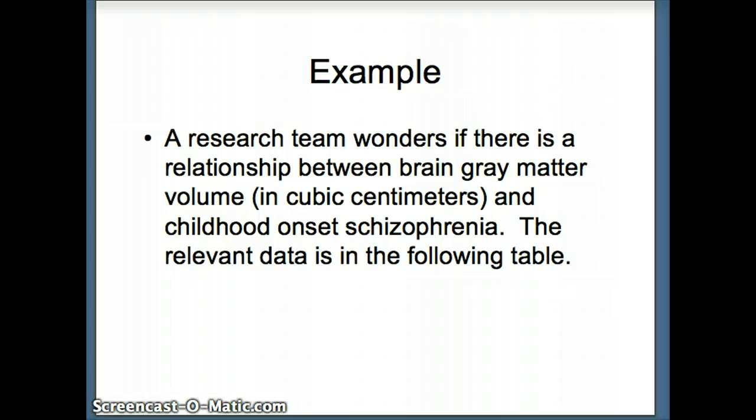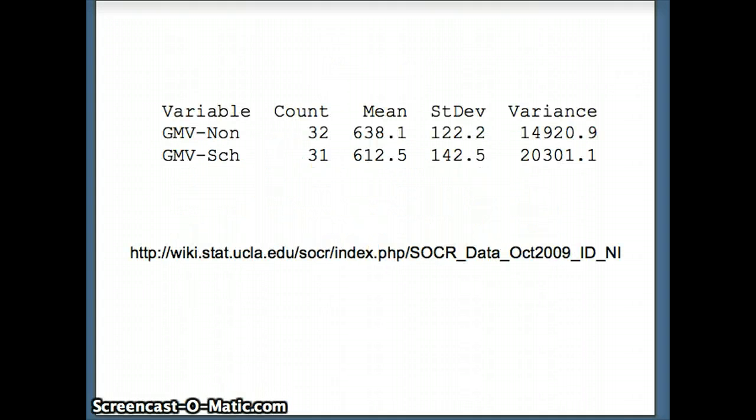So here's our question. A research team wonders if there is a relationship between brain gray matter volume in cubic centimeters and childhood onset schizophrenia. The following data is in the table. We have 32 in a non-schizophrenic group with a mean gray matter volume of 638.1 cubic centimeters, 31 folks in the schizophrenic group with a mean of 612.5 cubic centimeters, and the standard deviations here are relatively large. That data is available at the site listed on the slide.